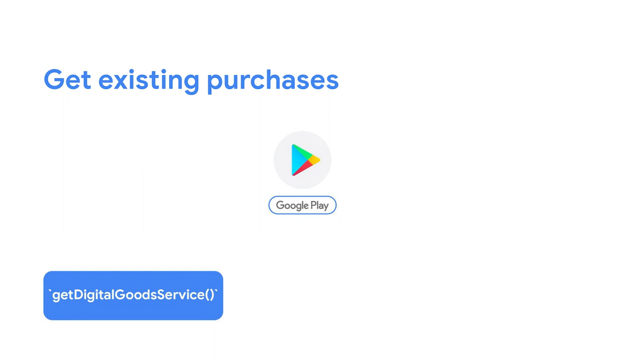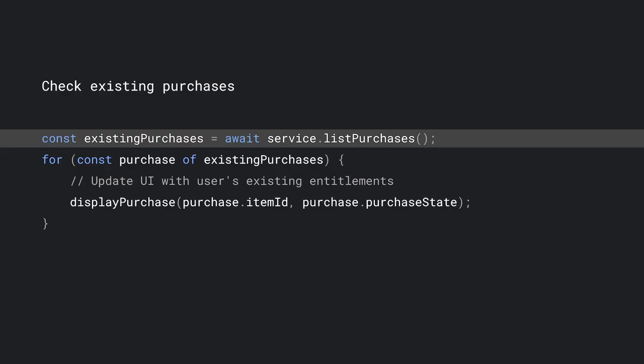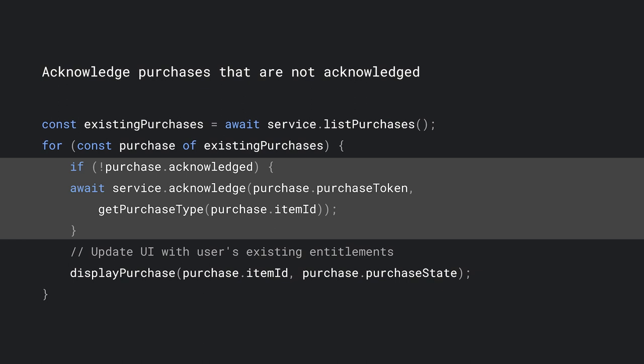Now that your user has made a purchase, use the ListPurchases method to get a list of the user's currently owned items or subscriptions. Make sure you have the digital goods service for the Play Store, then call ListPurchases. Play will return the user's current purchases that have not been consumed, or subscriptions that are ongoing. These purchases may have come from the same user using your app on another device, a previous install, or redeemed from a promo code. ListPurchases returns a promise which resolves to a sequence of purchase details with item IDs that correspond to the product IDs in the Play Console. The purchase details also include useful information like the purchase token, purchase state, and whether the purchase has been acknowledged. As you're going through a user's existing purchases, it's a good time to check for any purchases that are not acknowledged — unacknowledged purchases may exist due to network interruptions. Simply check the acknowledge field in the purchase details object and call the acknowledge method if required.